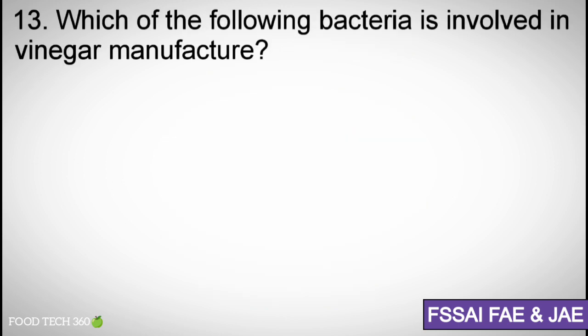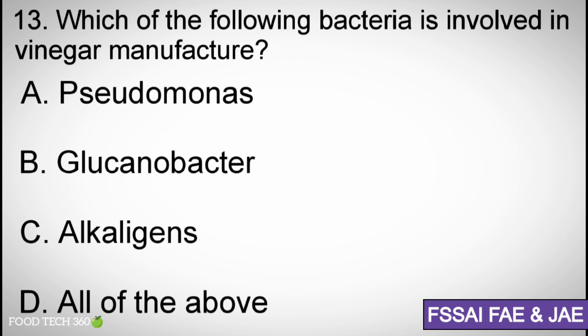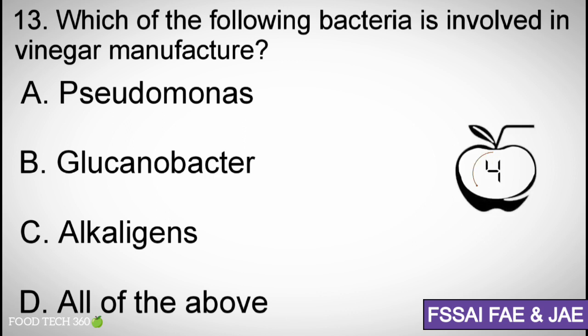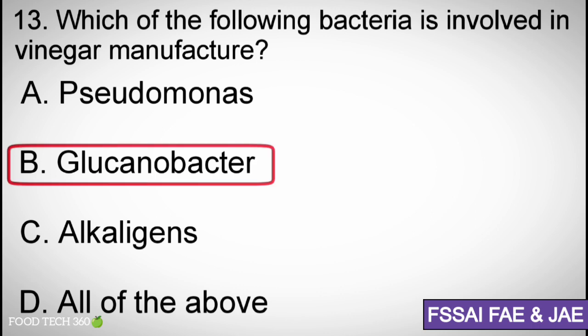Question number 13. Which of the following bacteria is involved in vinegar manufacture? A. Pseudomonas, B. Gluconobacter, C. Alcaligenes, D. All of the above. Correct answer: B. Gluconobacter.